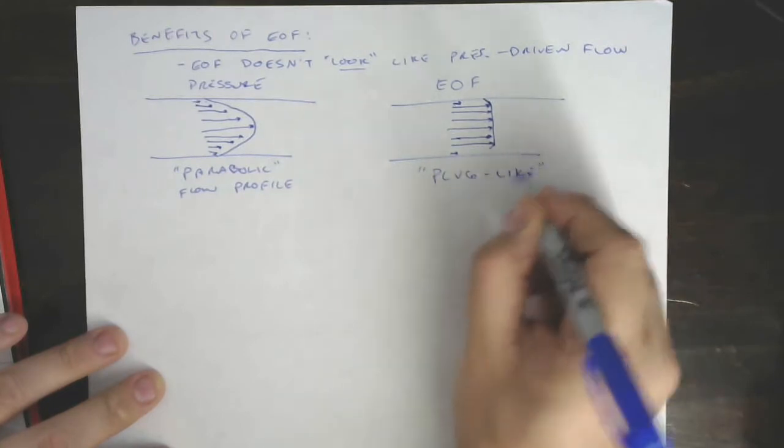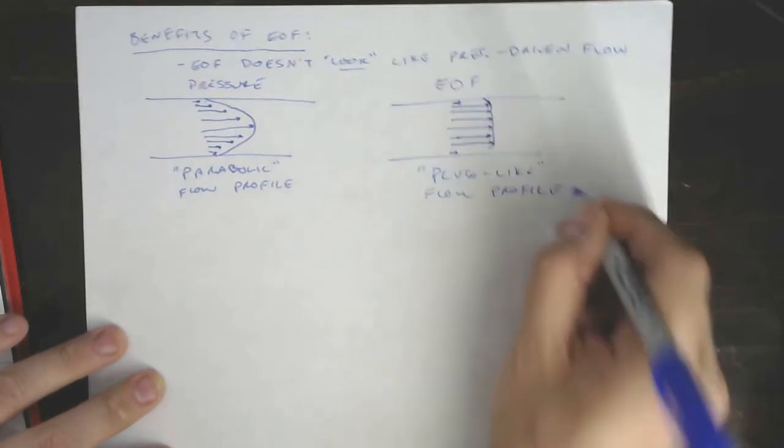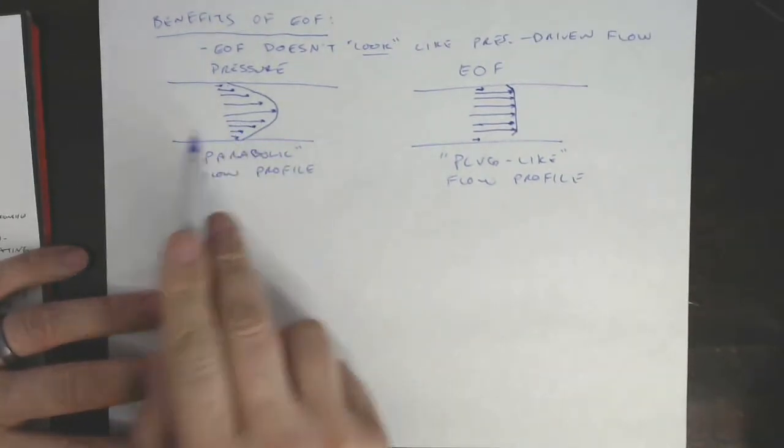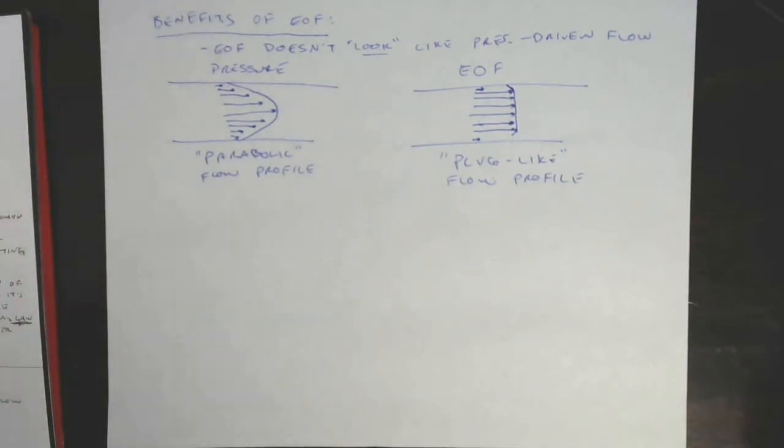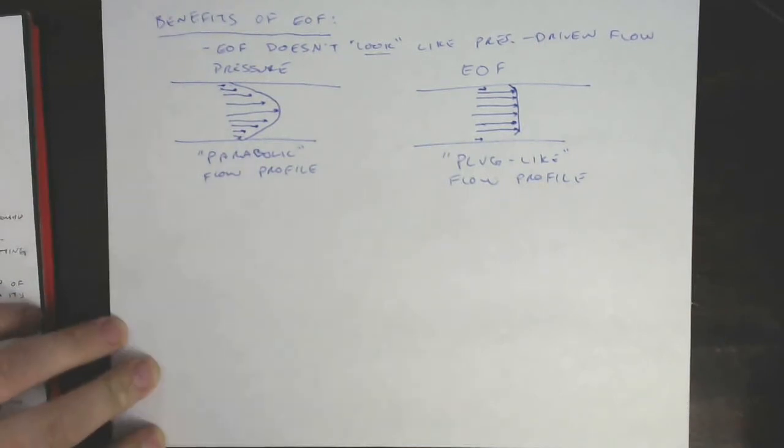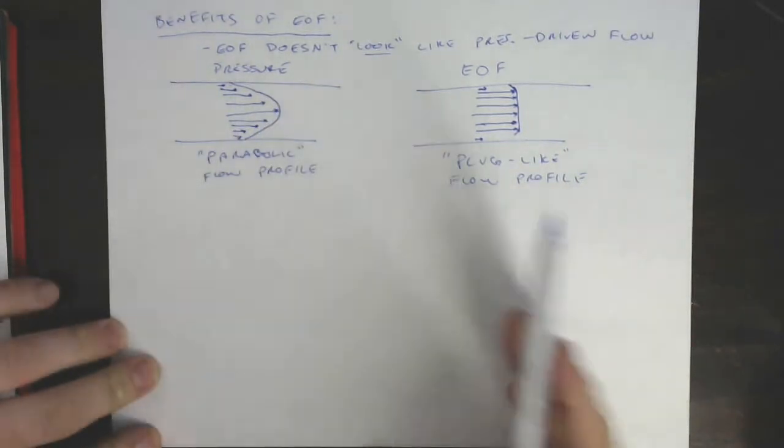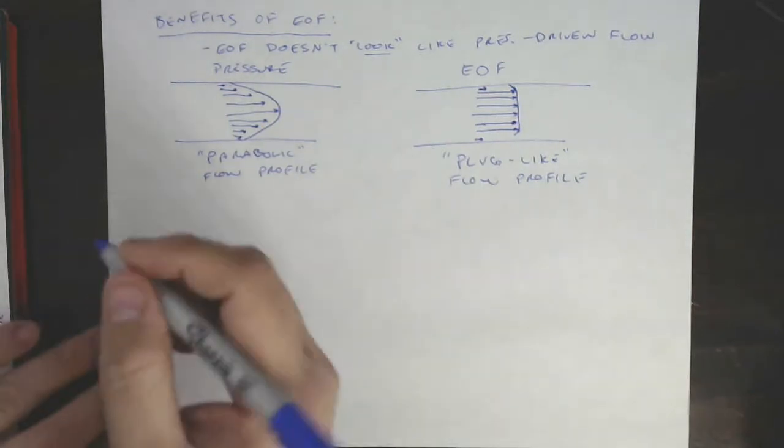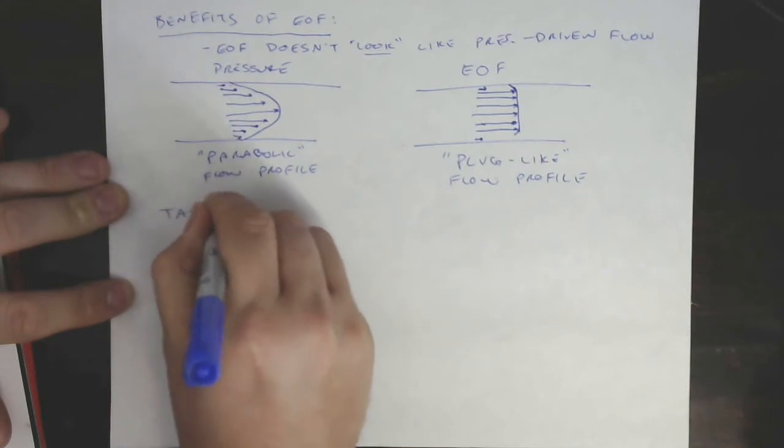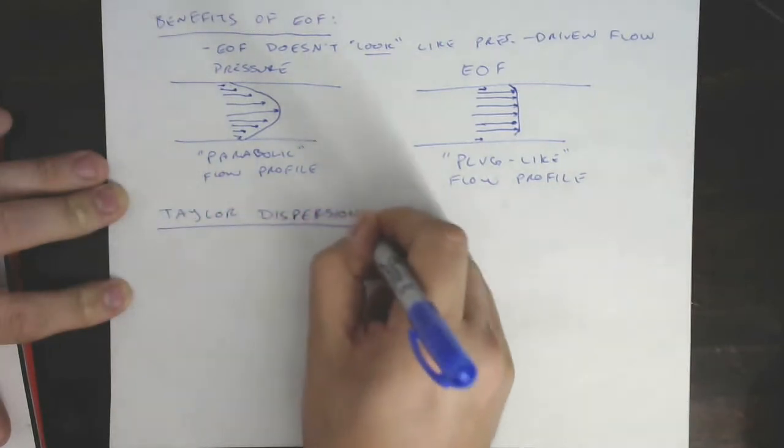Okay, so why is this a benefit? Well, it's because there's a mechanism in pressure-driven flow that leads to band broadening that we did not talk about previously. So I'm going to tell you about that mechanism. It's one that I care a lot about, it's intimately related to a lot of work that we do in my lab, and we're gonna see basically how that happens here and then we're gonna know by contrast it does not happen over here.